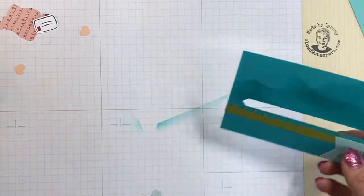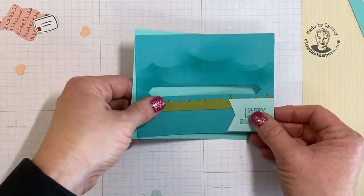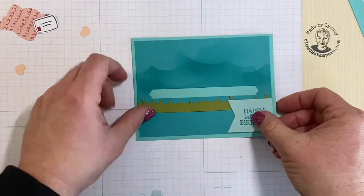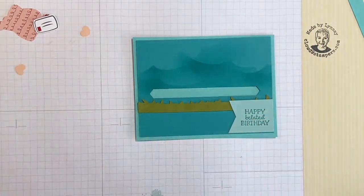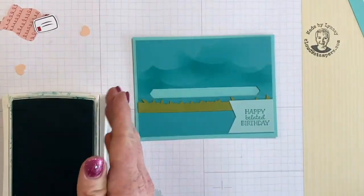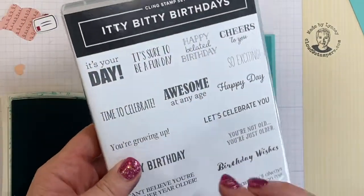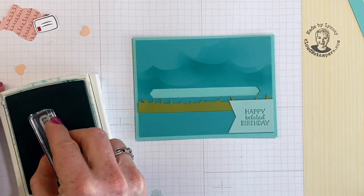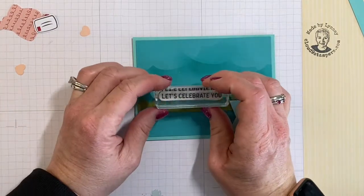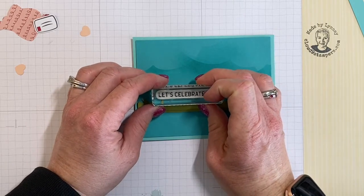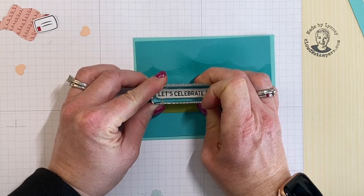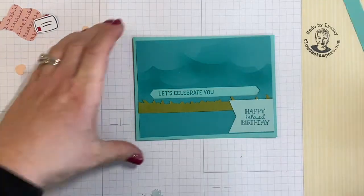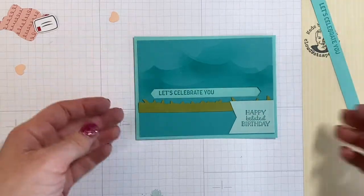The next step is you're going to bring in your layering piece and you're just going to line it up without adhering it down, just eyeball it. You're going to bring back in your Bermuda Bay and you're bringing in another greeting from the Itty Bitty Birthday stamp set, so we're bringing in Let's Celebrate You. You want to ink it up and then just layer it in the track, just like that. This is going to be the greeting that's revealed from our pull tab.